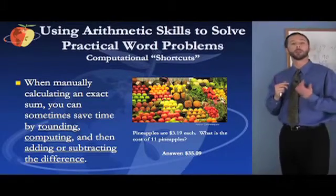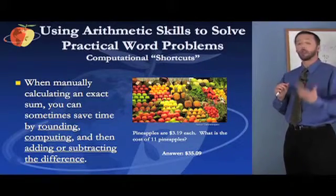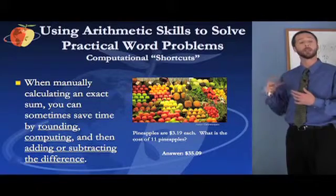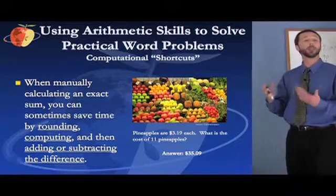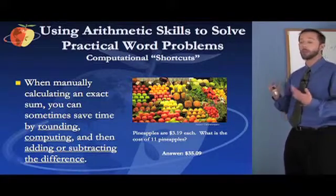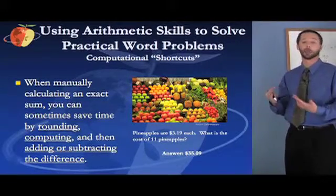So that can be a computational shortcut to just round something off, see what you get. And then if there's whatever you rounded off, just multiply that out, add it back in. And then you would get the full result of what you were trying to multiply or divide as the case may be.